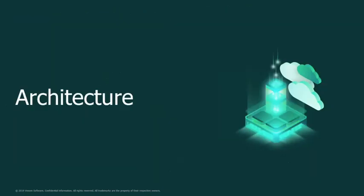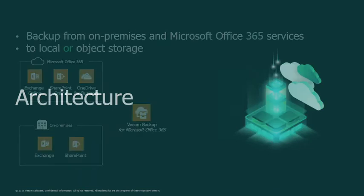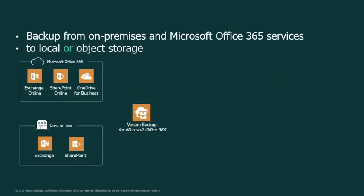Now I'll cover the architecture and how it all holds together. The Veeam Backup for Office 365 covers both on-premise and Exchange Online, SharePoint, and OneDrive for Business. The main component is the Veeam Backup for Office 365 server, which can be a virtual machine, a physical box, on-premise, in a cloud of your choice, or downloaded from the marketplace. This machine is also the data mover — what we call a proxy box. It can be the same box or a separate box.